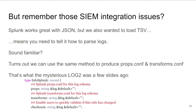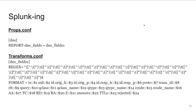So what do props and transforms look like? In props you have a section for each log, and you say I have a report, and what I want you to do is pull it from a transform called DNSFields1. Then in transforms.conf you create a stanza that defines DNSFields1, and this regular expression and format tell it what to do.